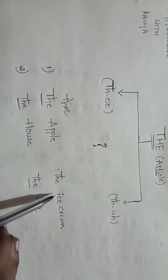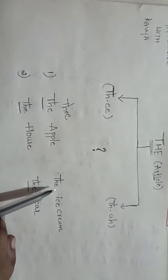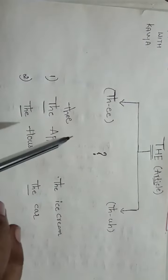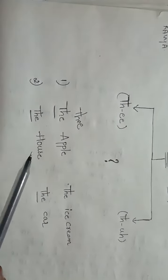When you are writing T-H-E before this vowel, you have to pronounce it as 'thee': thee ice cream, thee apple. Whereas in the other example, H-O-U-S-E, house, this H is a consonant.